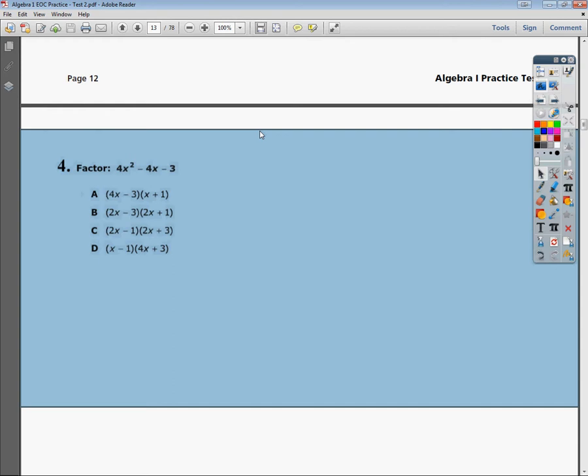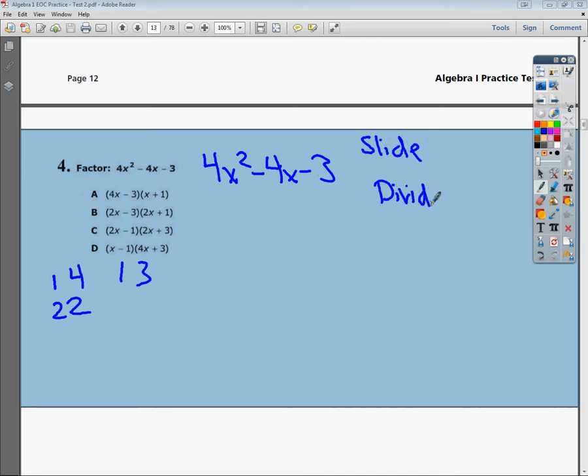There's a couple ways you can go about doing this. Actually, there's multiple ways. One of them is to set a factor list for 4 and a factor list for 3 and then check and guess your way to the answer. I'm going to use slide and divide really quickly. This system is called slide and divide. On my channel, I've got some more videos on it. I like to call it slide factor divide.